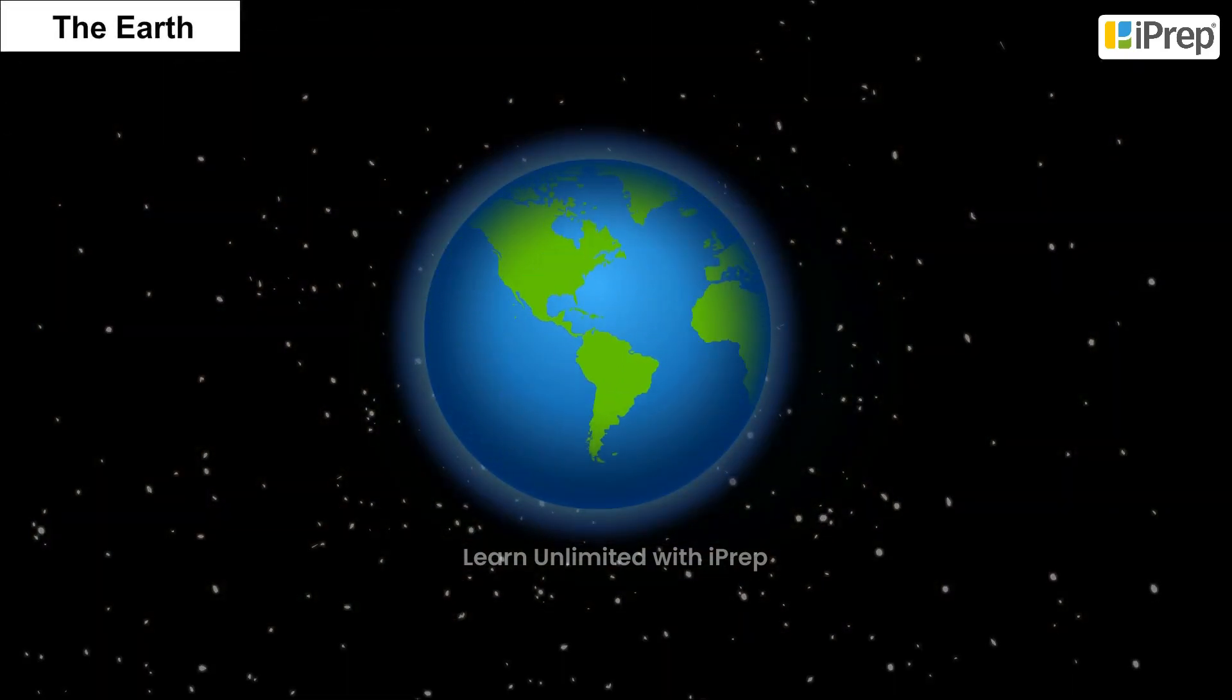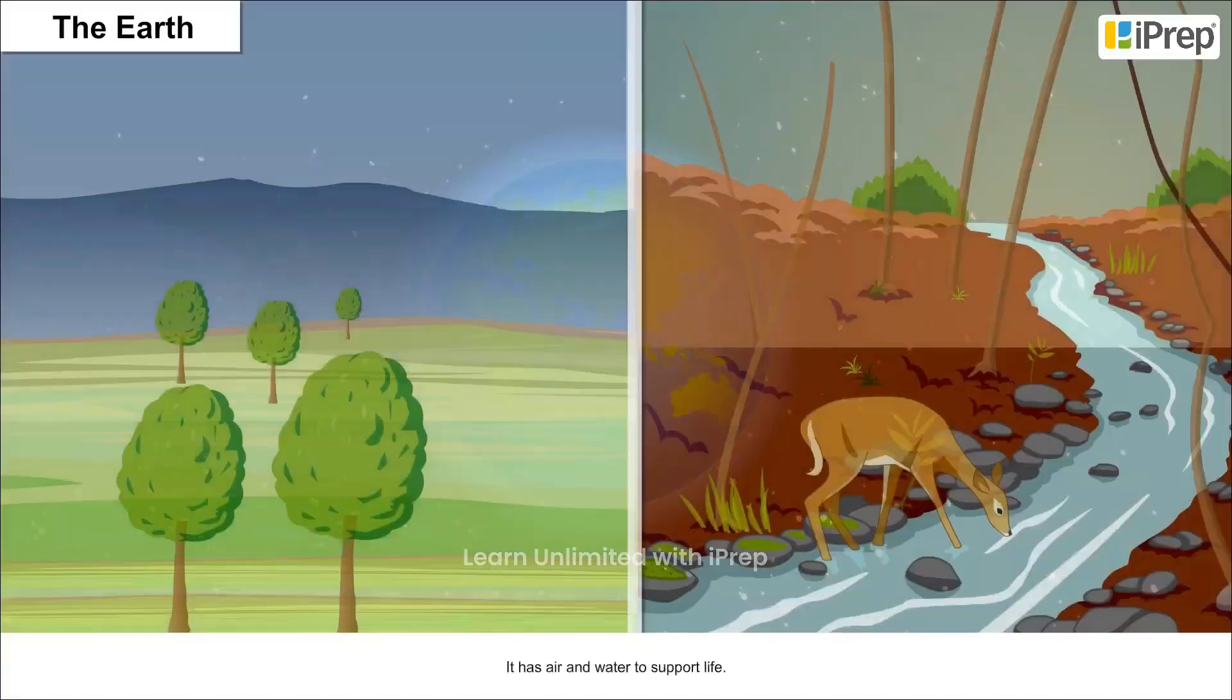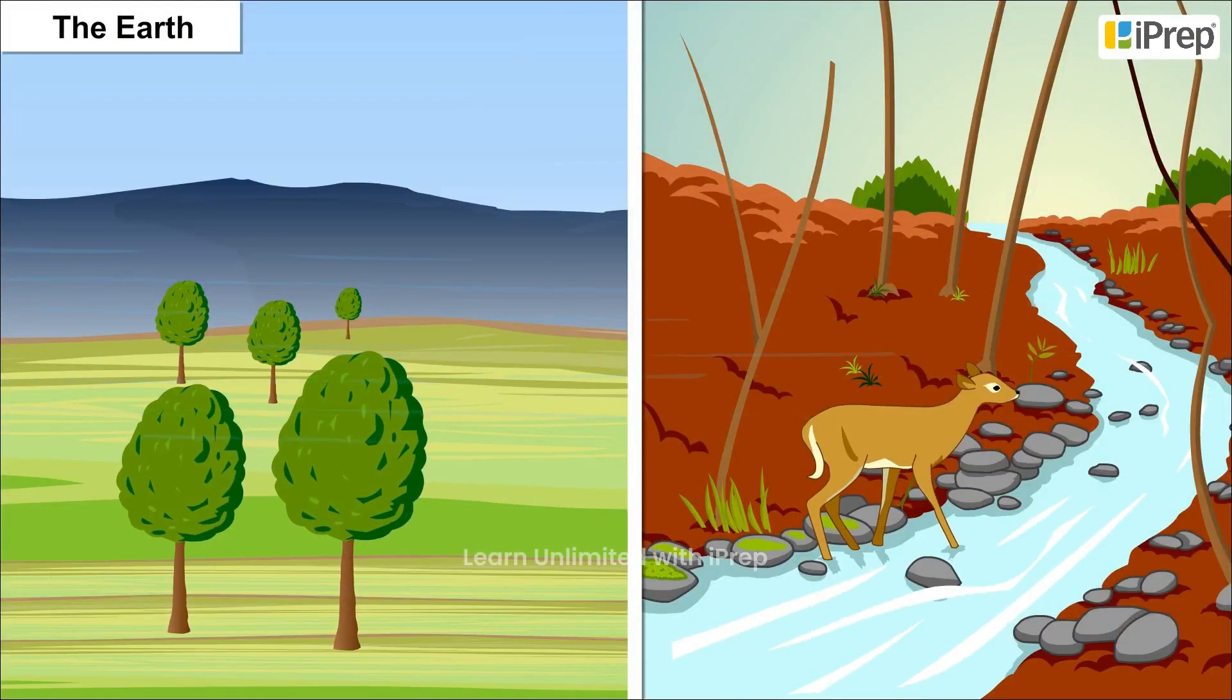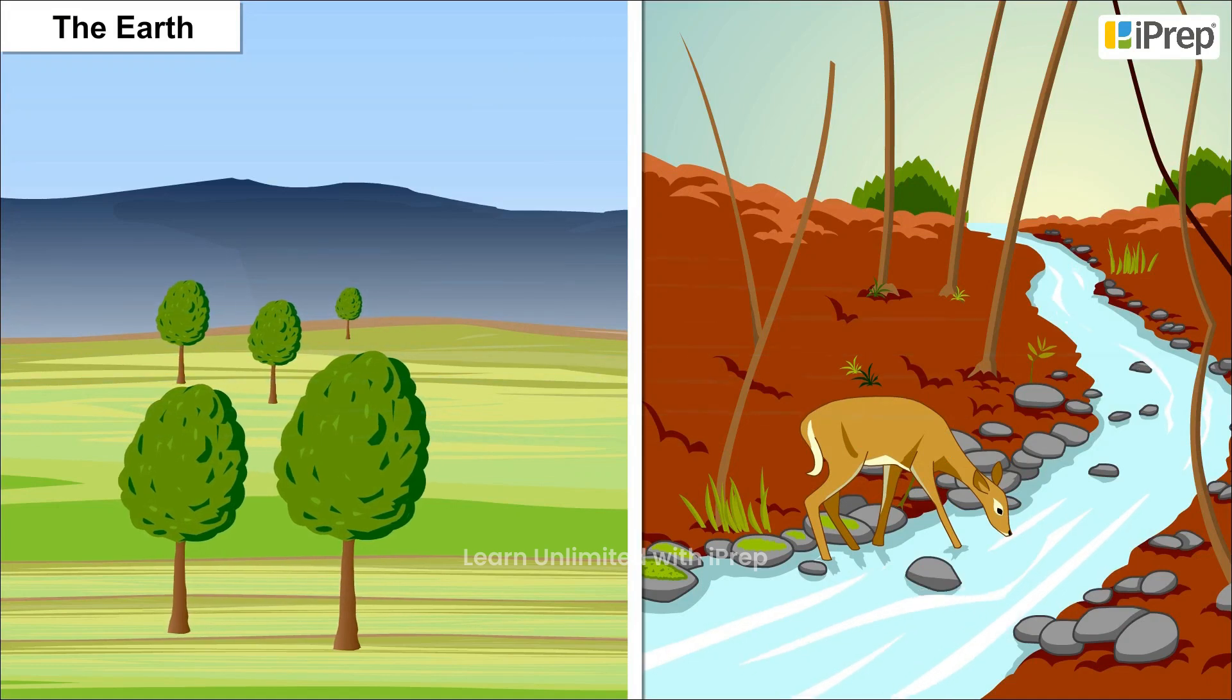It is the fifth largest planet. It has air and water to support life. Two-thirds of the Earth's surface is covered by water.